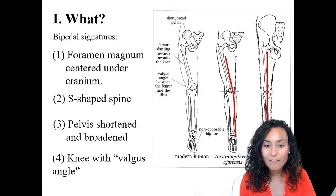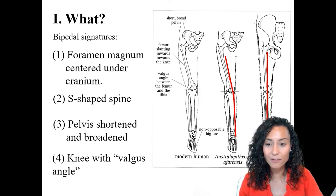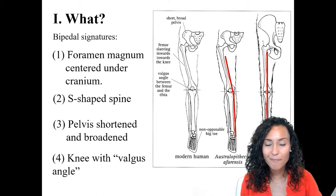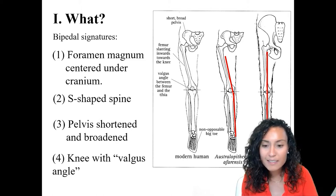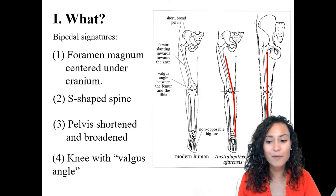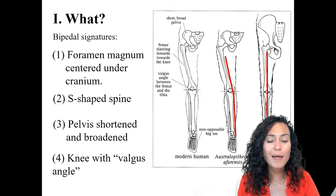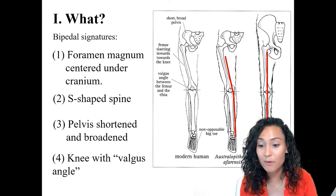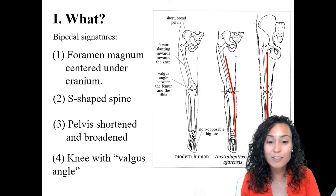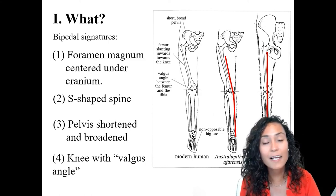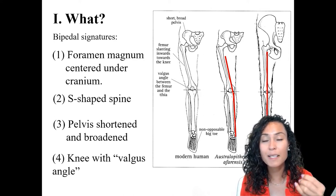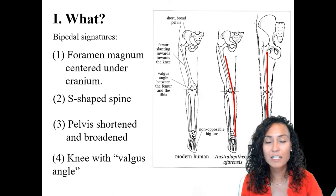In humans, who have wide hips, the femur is angled so that the knee is actually closer to the body's midline than the hips. This helps bring the knees closer together, placing the feet directly below the center of gravity. In quadrupeds, the center of gravity is less important during walking because they're supported by two extra legs. A lot of the anatomical shifts we see in modern humans are linked to maintaining a good center of gravity.